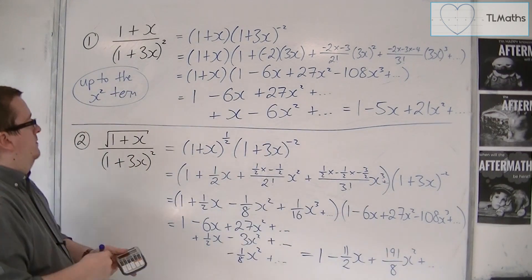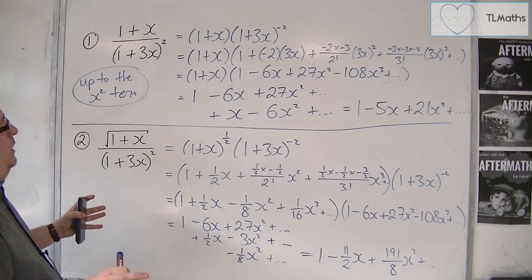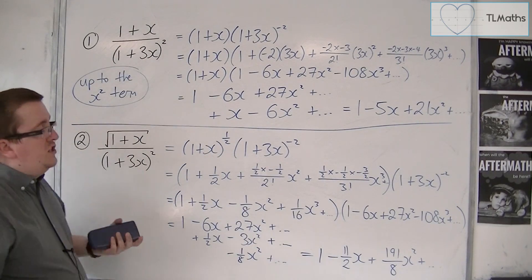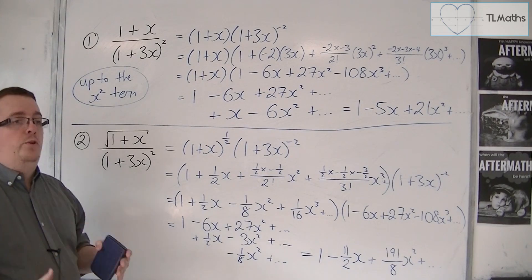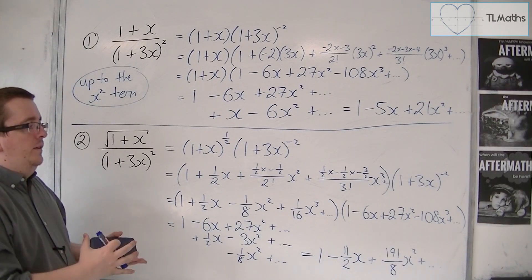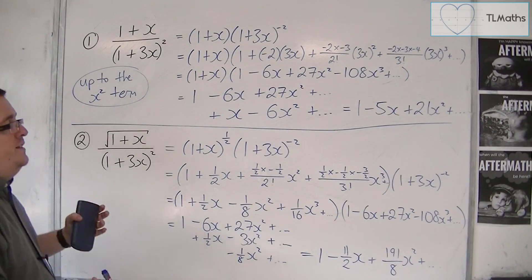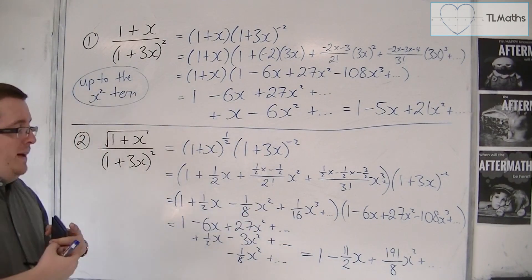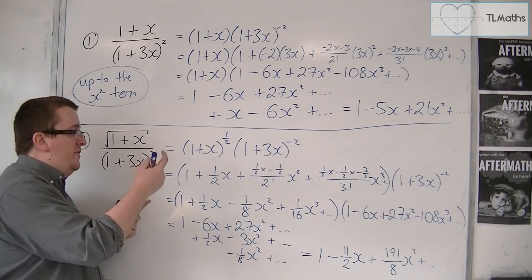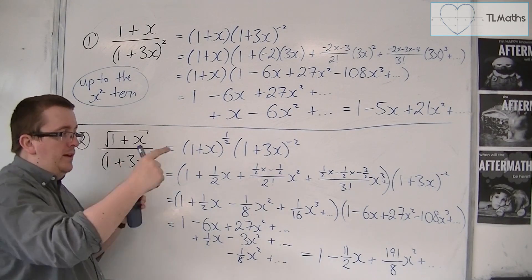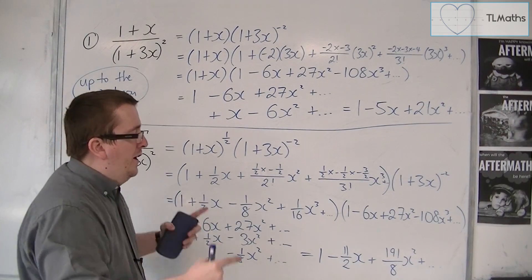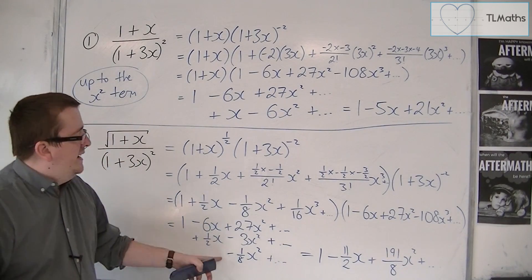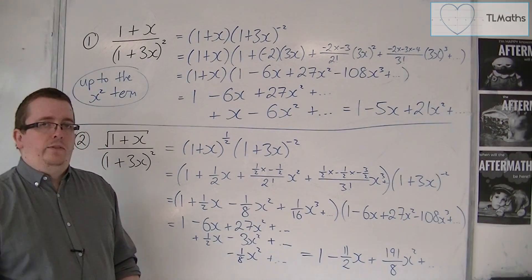So that's how we find the expansion of either of these two examples up to the x² term. It's effectively finding two separate binomial expansions and then multiplying the terms together, only keeping the ones that give you a constant, linear, or quadratic term, and ignoring the rest.